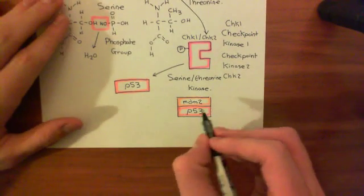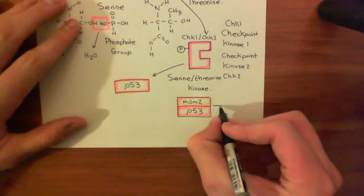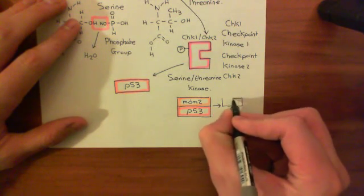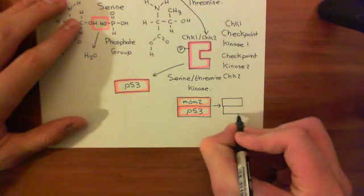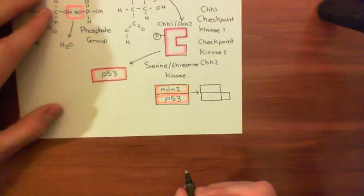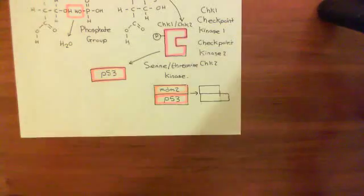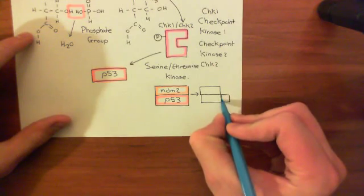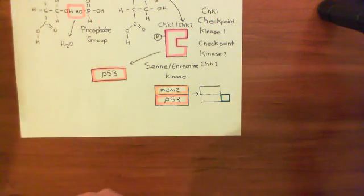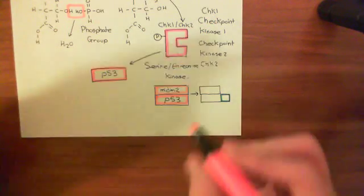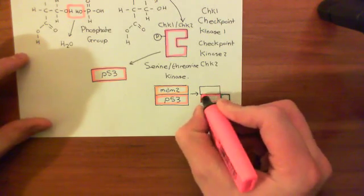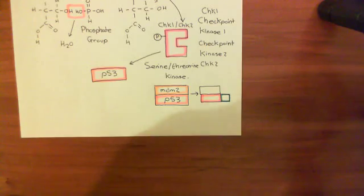This is going to be ubiquitinated, with ubiquitin added on the side of P53 here. Then what's going to happen is the P53 is going to be destroyed. It's going to go through the proteasome and be destroyed. That is why P53 is not active usually in a cell, because you're making P53, but as soon as you make it, it ends up bound to this MDM2 protein.